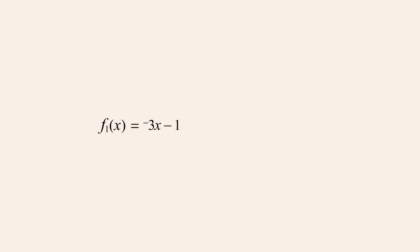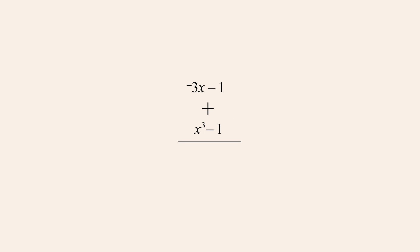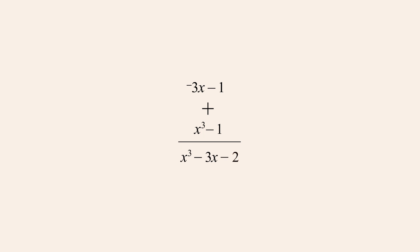As an example, let's add the polynomial functions negative three x minus one, and x cubed minus one. To add these two polynomials, we add all the individual terms, rearranging the terms in order of decreasing exponents, and combining like terms. So the sum of these polynomials is x cubed minus three x minus two.